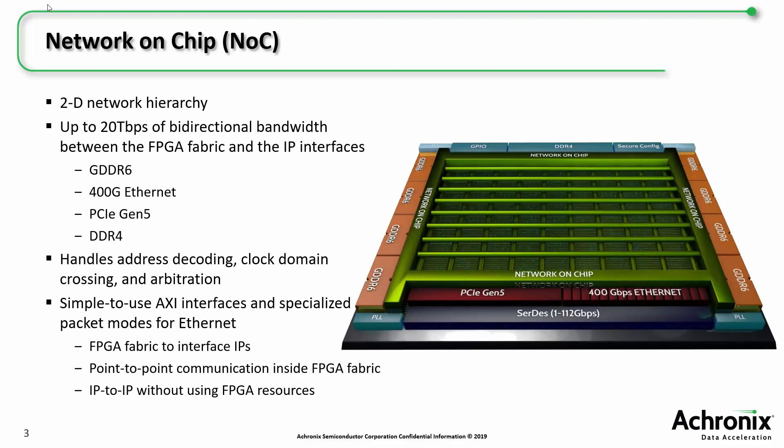So how can we move these massive amounts of data around the FPGA efficiently? Achronix's solution is a two-dimensional hierarchical Network on Chip, or NOC, that connects all the high-speed IP interfaces and overlays on top of the FPGA fabric. This provides for up to 20 terabits per second of bidirectional bandwidth between points in the FPGA fabric and the various IP interfaces, including GDDR6, 400-gig Ethernet, PCIe Gen 5, and DDR4.